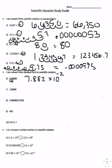For number seven, you move the decimal one, two, three, four, five times, and get 1.18 times 10 to the fifth power.